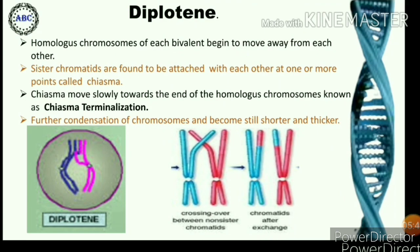In diplotene, the homologous chromosomes of each bivalent begin to move away from each other, and the two homologous chromosomes are found to be attached with each other at one or more points called chiasmata. The chiasmata move slowly towards the ends of the homologous chromosomes — this movement is known as chiasma terminalization, meaning movement of chiasmata towards a terminal position. There is further condensation of chromosomes in the bivalents, and progressively they become still shorter and thicker.